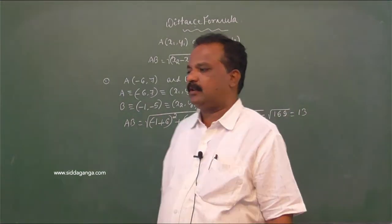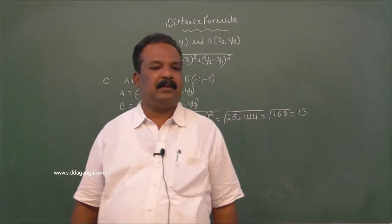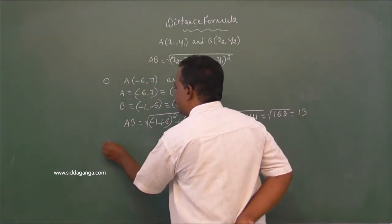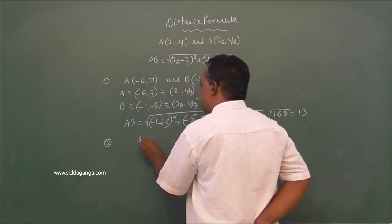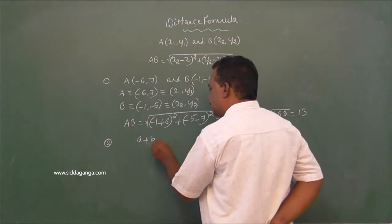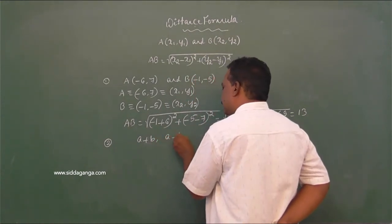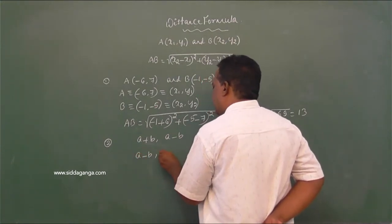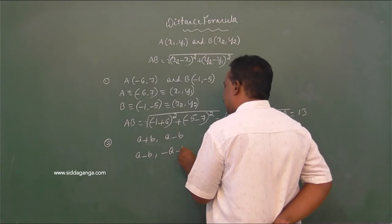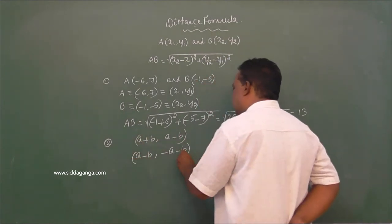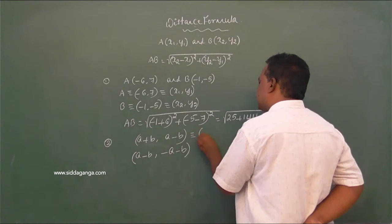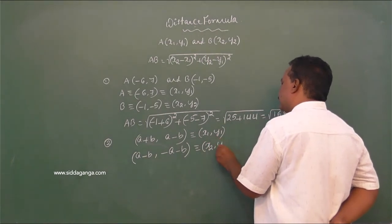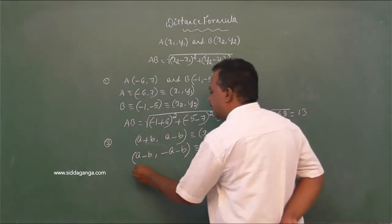Now let us take one more problem. Given points: A(a+1, a−b) and B(a−b, −a−b). This is one point and this is another point. Take this as (x1, y1) and this as (x2, y2). Let us apply the formula directly.